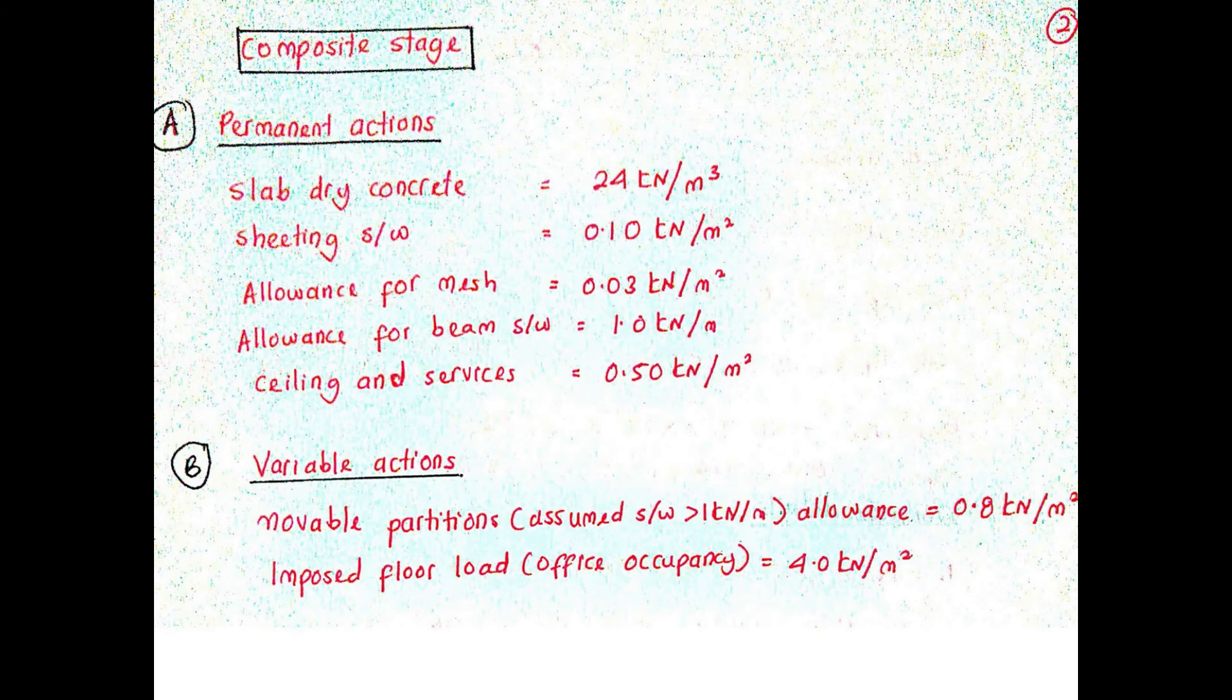Meanwhile, for the composite stage, the permanent action that must be considered are slab dry concrete, self-weight of the sheeting profile, mesh, beam self-weight, ceiling and services. Variable action must consider movable partitions and occupancy floor load.